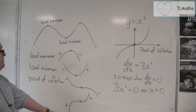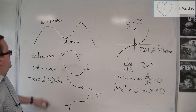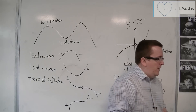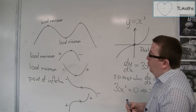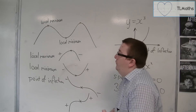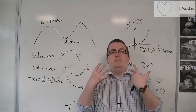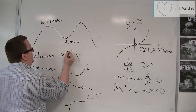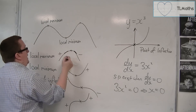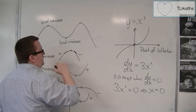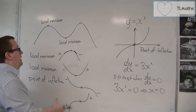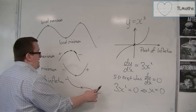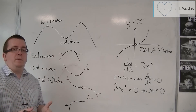So there are two different types of points of inflection that we need to know about, alongside local maximums and local minimums. We need to be able to identify which is which. What you need to do is look at the gradient either side of the stationary point. If you've got positive on the left and negative on the right, then it's a local maximum. If it's negative on the left and positive on the right, it's a local minimum. And if it's going from negative to negative or positive to positive, you know it must be a point of inflection.